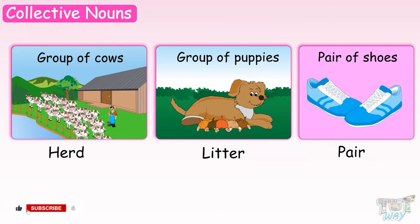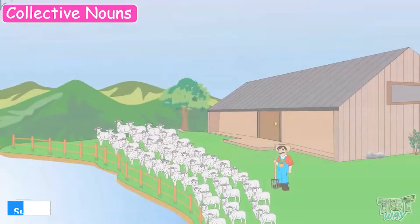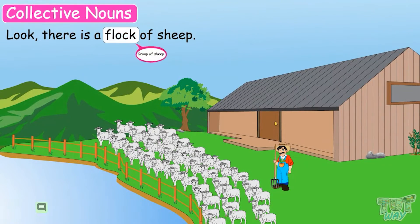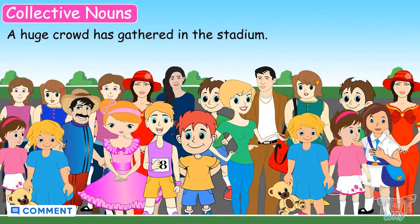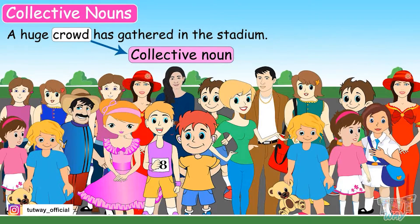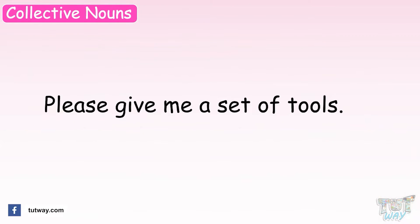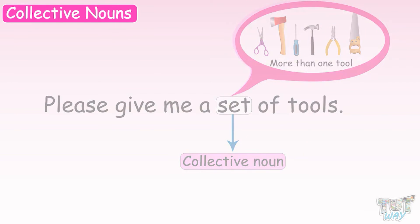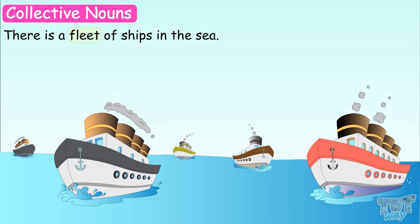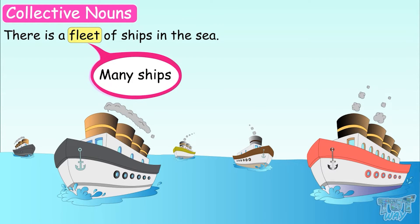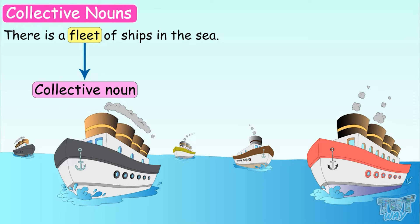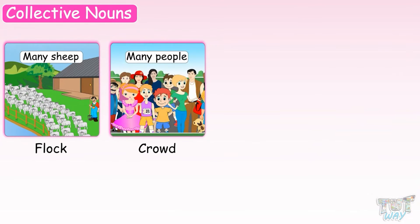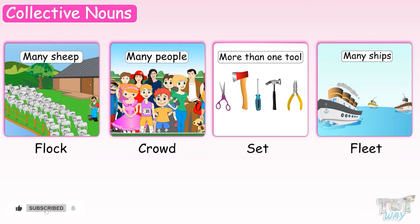Let us look at some more examples of collective nouns. There is a flock of sheep — means there is a group of sheep. A huge crowd has gathered in the stadium. Here, crowd means many people, so it's a collective noun. Please give me a set of tools — set means more than one tool. There is a fleet of ships in the sea; fleet means many ships, or a group of ships. So flock, crowd, set, and fleet are all collective nouns, as they represent a collection of things, animals, or persons.